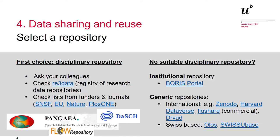You do not have to publish all data on the same repository. If you have different data for which there are different subject-specific repositories, or only a part of the data fits on a subject-specific repository, you can choose more than one repository and combine the different types. It is important to link to the other data whenever possible.